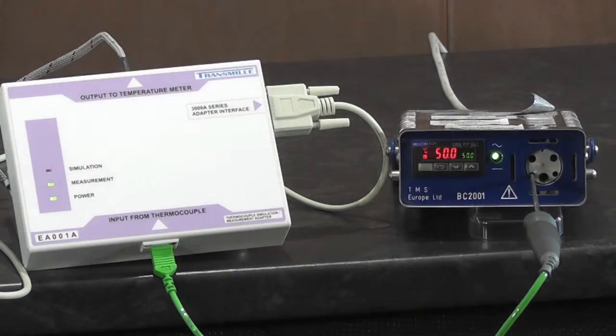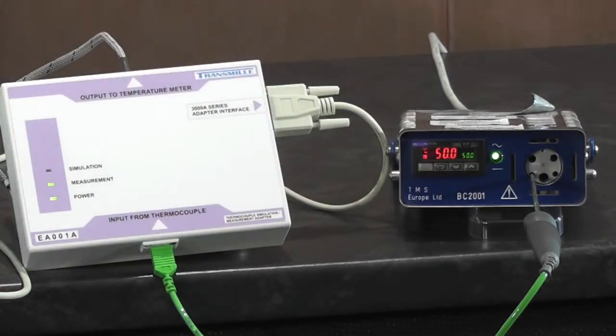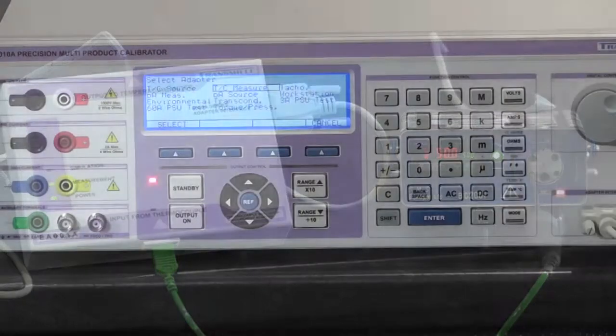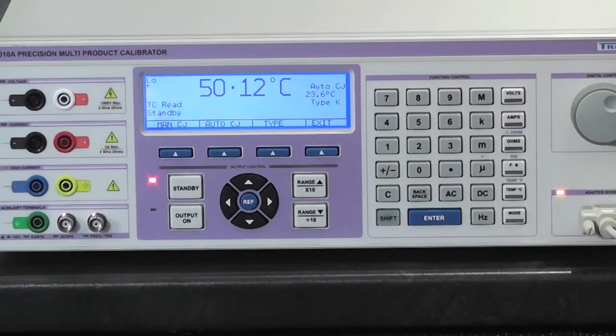To use the thermocouple adapter measurement function begin by connecting the adapter to the unit under test. In this case a K type temperature probe with a reference temperature of 50 degrees C. Set the calibrator to TC measurement mode. Recall the measured value from the calibrator display.